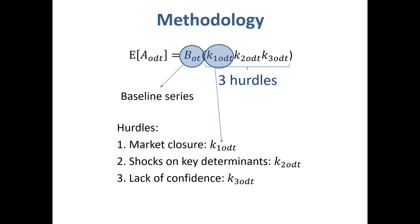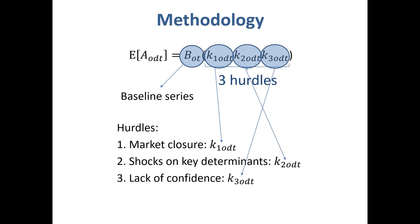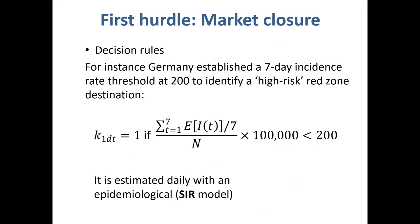The hurdles are based on market closure, shocks on key determinants such as income, and the lack of confidence in traveling. The baseline series can be forecast with time series models.